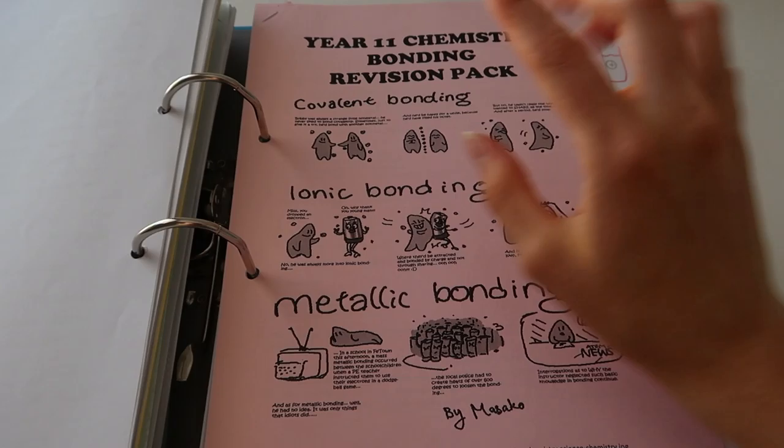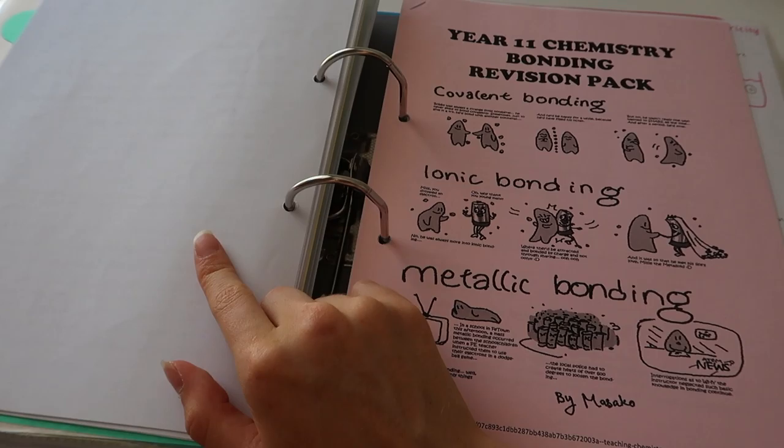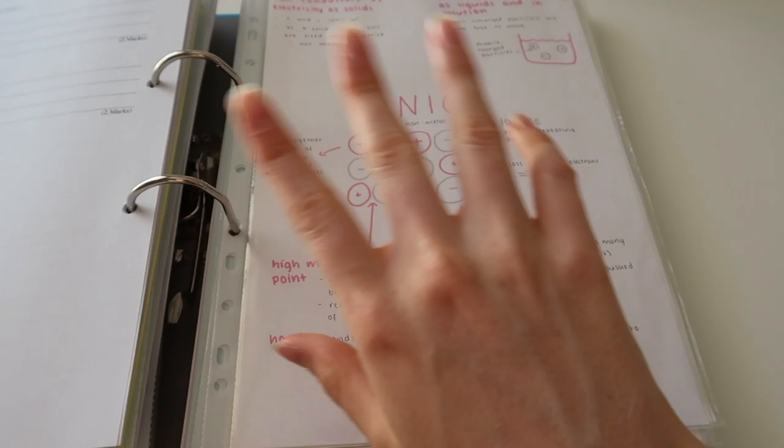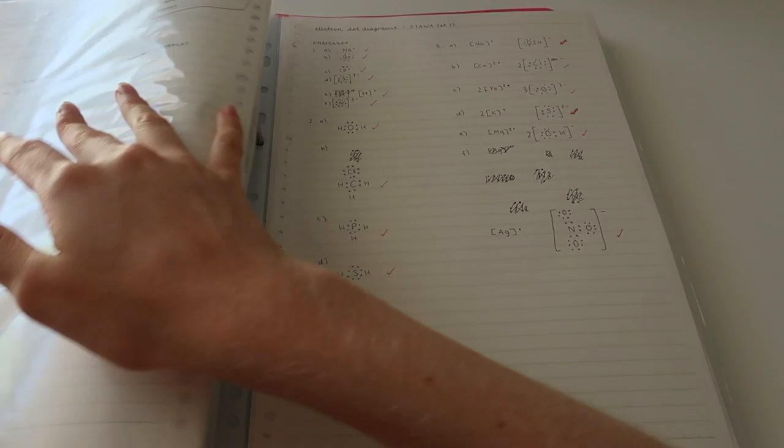I obviously printed it out twice. We get given a copy in class and then sometimes I print it out and do it again if I have extra time before the test. And then these were the notes that I made at home on this topic that didn't end up in my final end of year summary of all my notes things because I just didn't want them in there, so they're there.